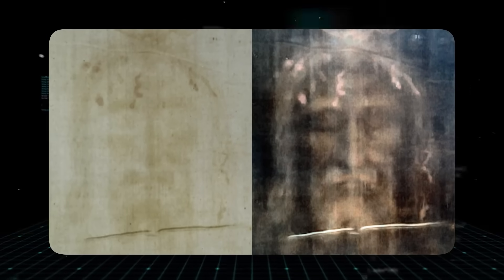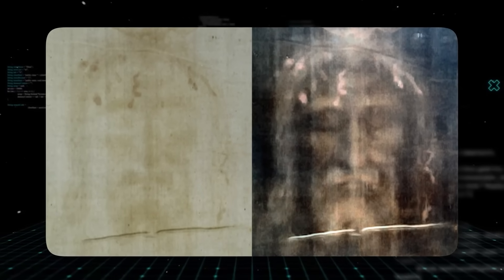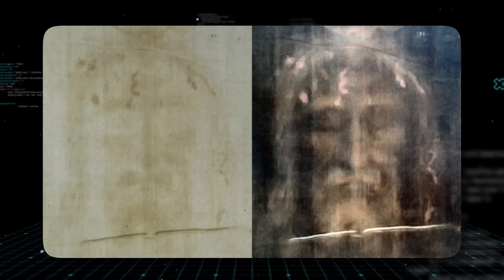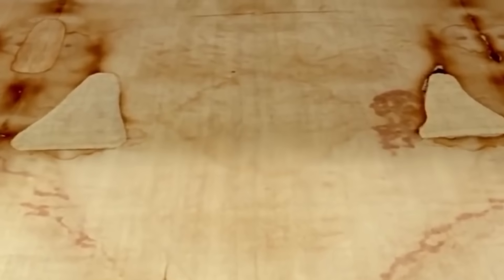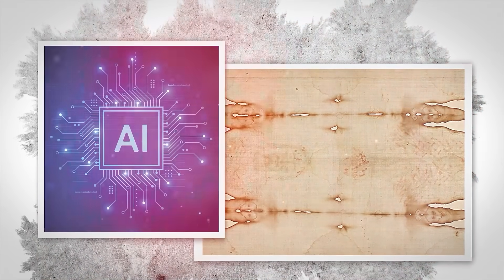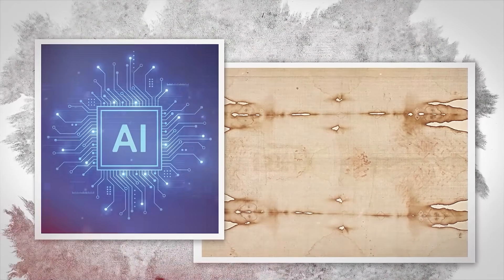The brightness and darkness of the image didn't just correspond to a three-dimensional shape. They did so with a mathematical consistency that followed a precise, predictable rule, almost like a physical law. Imagine a cloth being draped over a body, and some kind of energy is released from that body. The closer the cloth is to the skin, the stronger the effect, and the farther away it is, the weaker the effect.